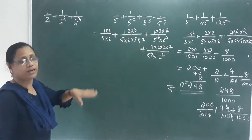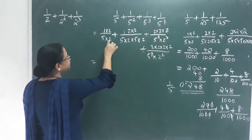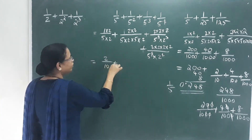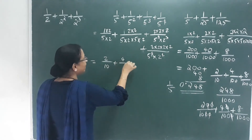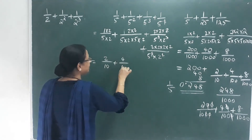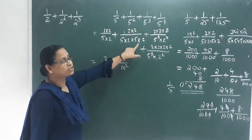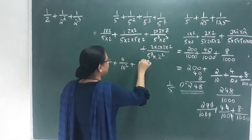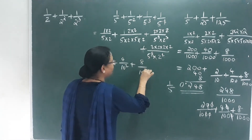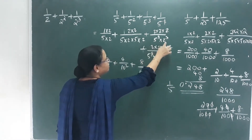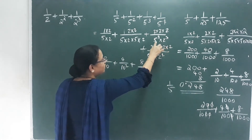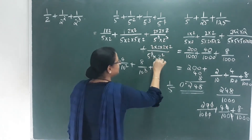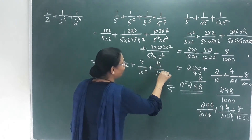We will add the decimal form here. This is equal to 2 by 10, plus 4 by 10 squared — there are 2 times — plus 8 by 10 cubed, plus 16 by 10 raised to 4.